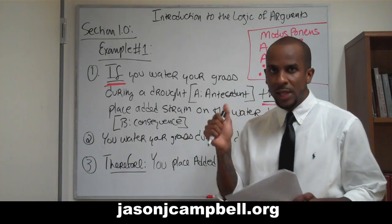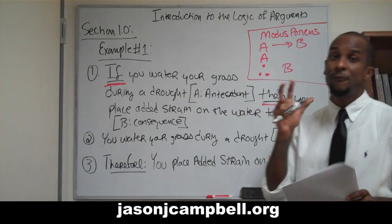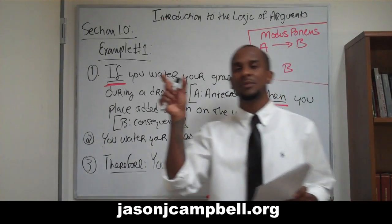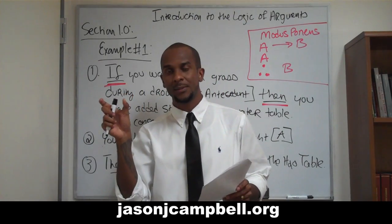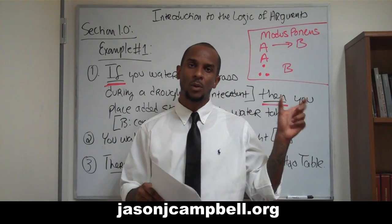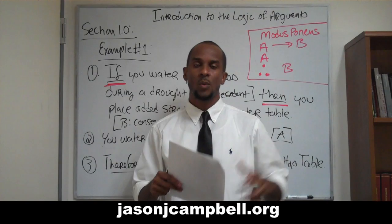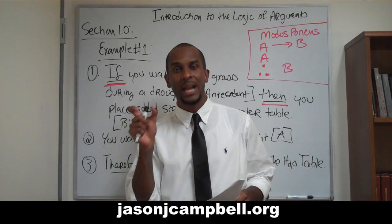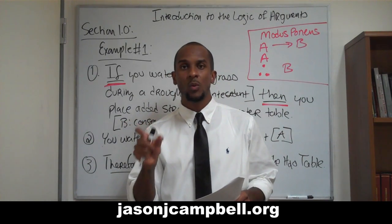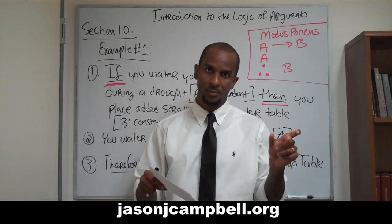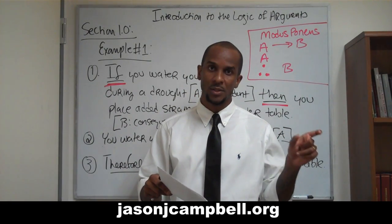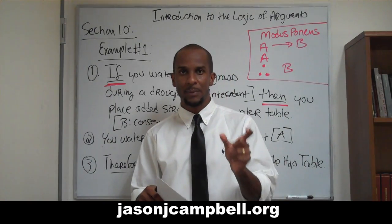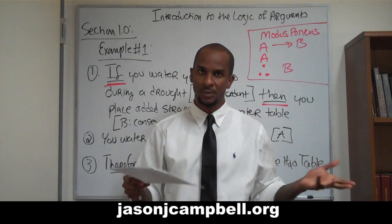How many parts do we have in modus ponens? We have four parts: we have our antecedent, we have our consequence, we have an affirmation of our antecedent, and we have our conclusion — the affirmation of the consequence. If the antecedent happens, the consequence happens. That's the format.